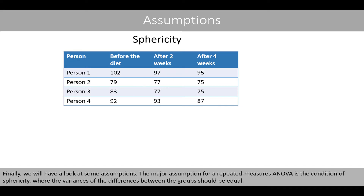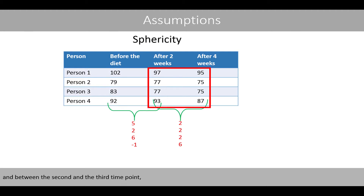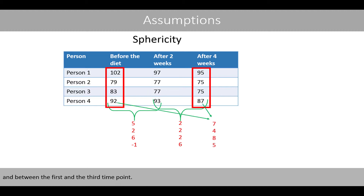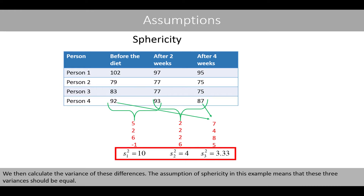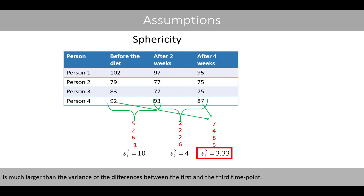Finally, we'll look at some assumptions. The major assumption for repeated measures ANOVA is the condition of sphericity, where the variances of the differences between the groups should be equal. For example, let's calculate the difference in the values between the first two time points, then between the second and the third time point, and between the first and the third time point. We then calculate the variance of these differences. The assumption of sphericity means that these three variances should be equal. Note that the sample variance of the differences between the first and the second time point is much larger than the sample variance of the differences between the first and the third time point.